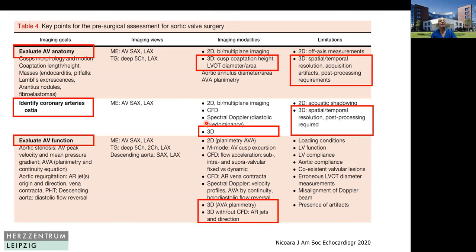If we go to the guidelines, there are three key points for pre-surgical assessment of the aortic valve. One is to evaluate AV anatomy with 3D, especially for the cusp, the coaptation height, and the diameters. The limitation is spatial and temporal resolution. The next is identifying the coronary artery ostia, also with 3D — again, spatial and temporal resolution may be a problem and post-processing is required. Then evaluate AV function, especially the 3D aortic valve area planimetry and the use of color Doppler.